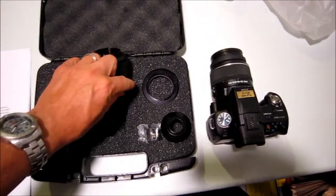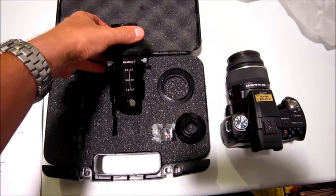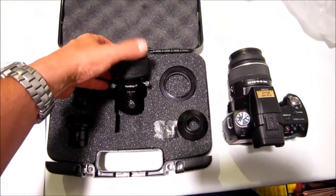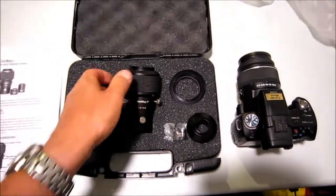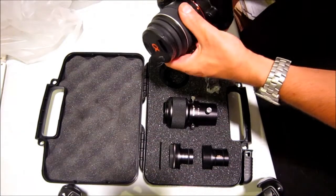The nice thing about the VariMag is it's from 1.5 to about 3.5 power, so you can really dial it in depending upon your microscope. It hooks right up to the Sony camera. We're just basically going to release the standard lens that came on it.